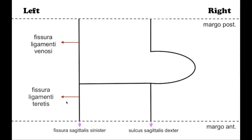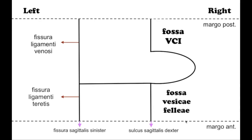The right limb of the edge is formed in front by the fossa for the gallbladder and behind by the fossa for the inferior vena cava. These two are separated from one another by a relatively narrow isthmus of hepatic tissue called the caudate process, processus caudatus.